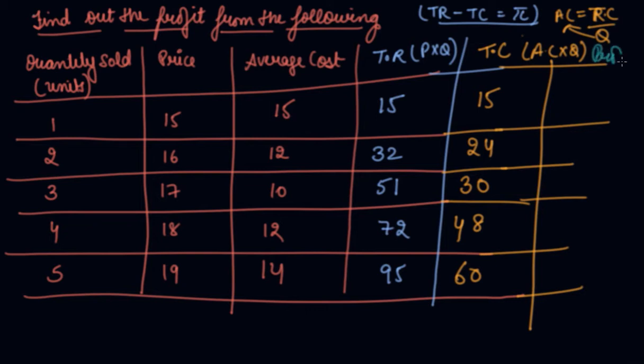Profit we can find out - that is your total revenue minus total cost. Here it is 0. 32 minus 24 you get 6. 51 minus 30 you get 21. 72 minus 48 you get 24. 95 minus 60 you get 25.